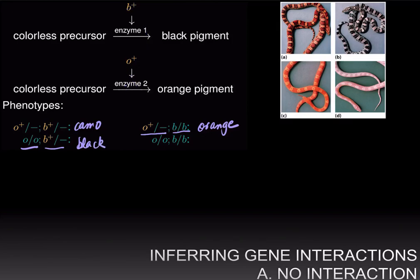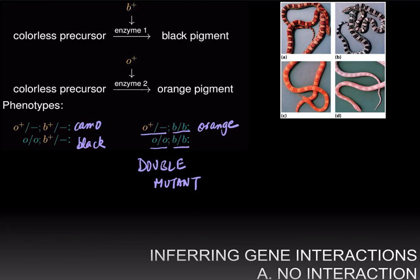Finally, if you are homozygous for the recessive alleles of both genes — and this is in fact the double mutant — you will have neither enzyme 1 nor enzyme 2, and therefore your phenotype is pink.